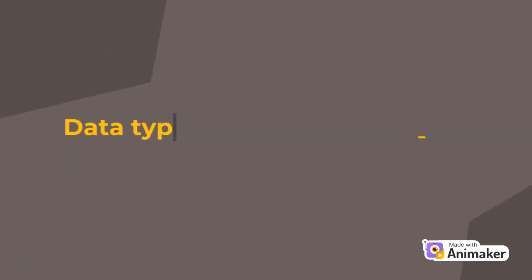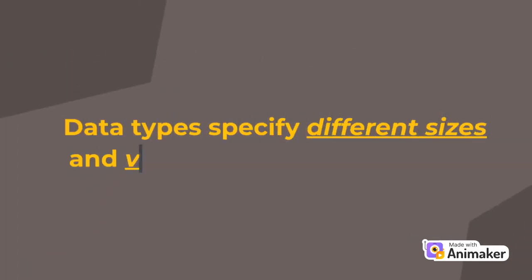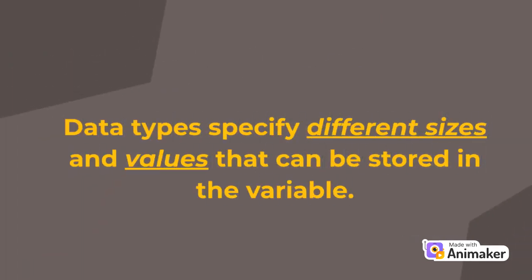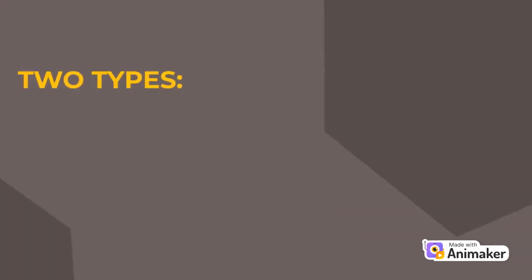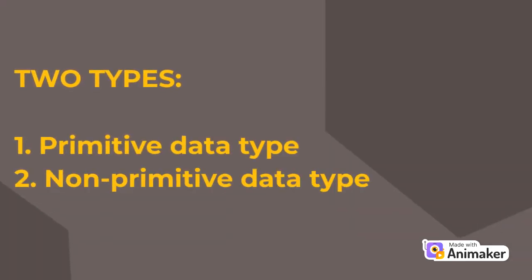In any programming language like Java, the data types specify different sizes and values that can be stored in the variable. Mainly, data types are divided into two types: one is primitive data type and the other is non-primitive data type.